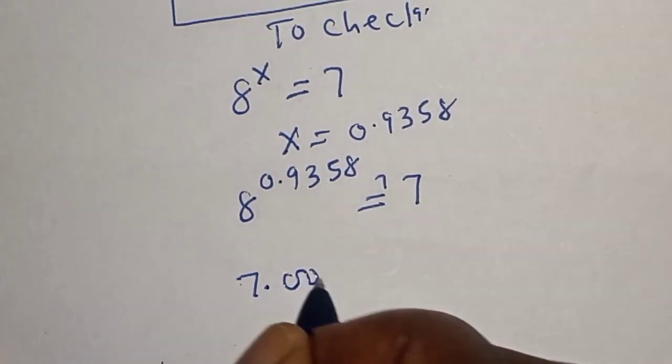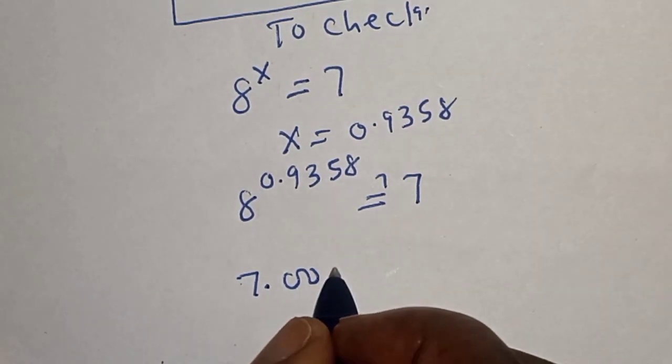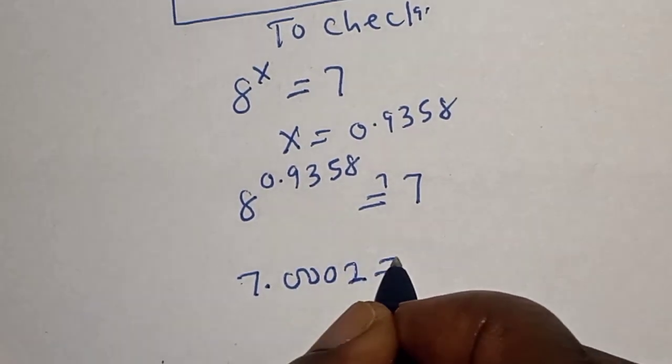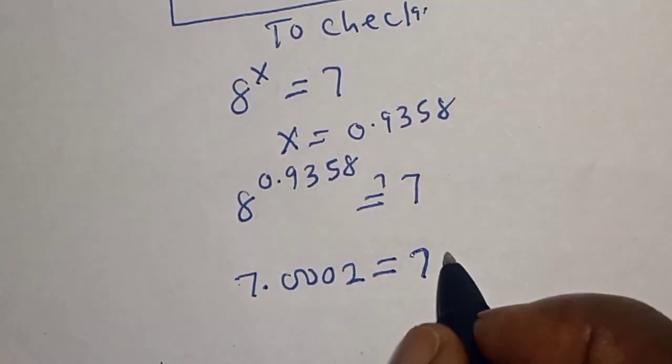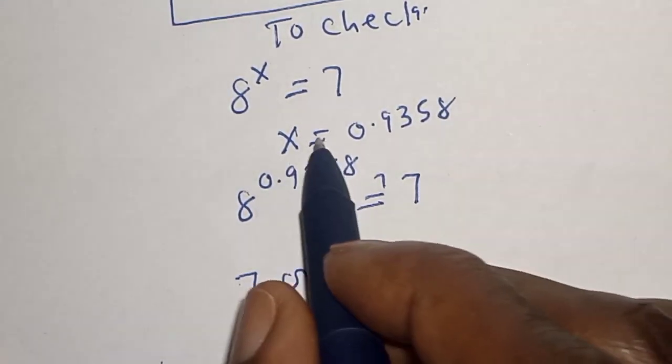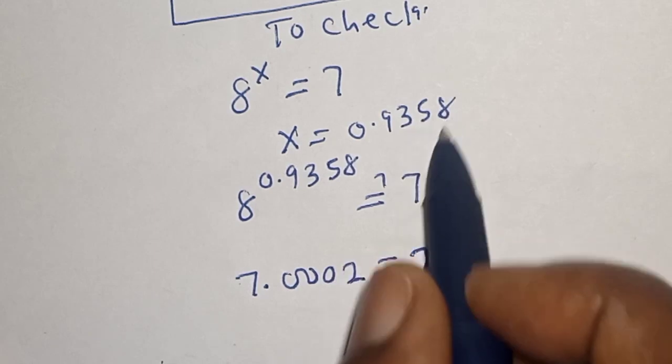7.0002, which is equal to 7 approximately. Then we satisfy the given equation at x is equal to 0.9358.